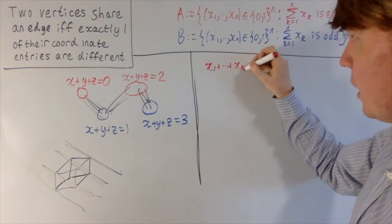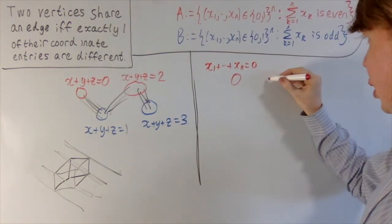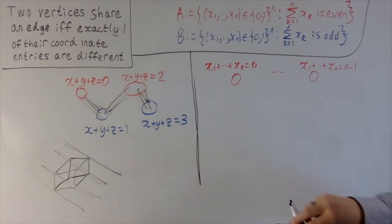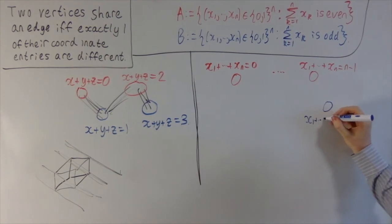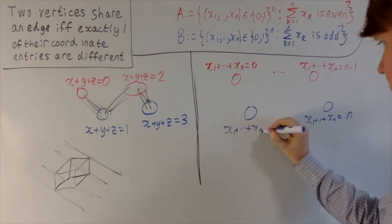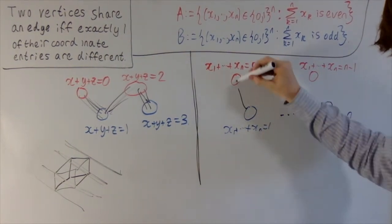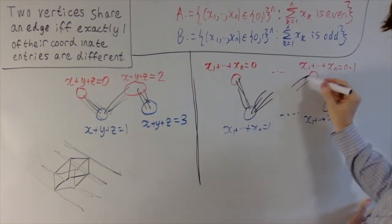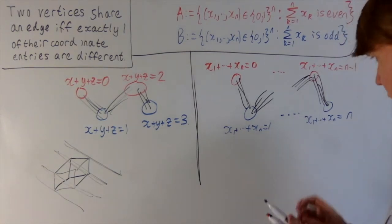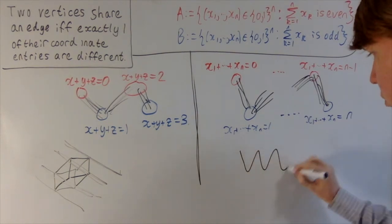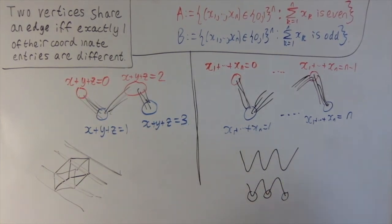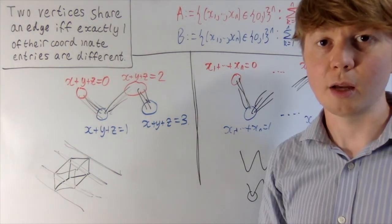The picture is very similar in n dimensions — only now we've got hyperplanes. You have the equation of a hyperplane with the sum of all coordinates equal to 0, and so on up to x₁ + ... + xₙ = n−1. The picture is slightly different depending on whether n is odd or even. If you were to draw this in n-dimensional space, you'd get lots of different hyperplanes all parallel to each other, all stacked one on top of the other.